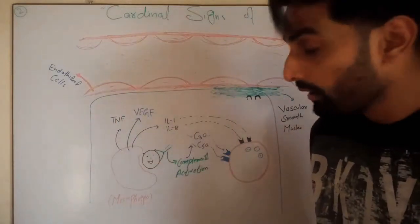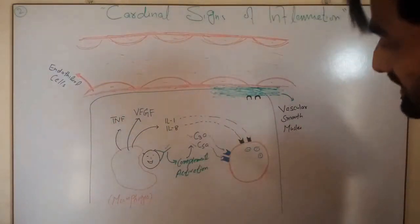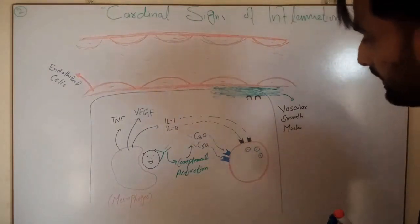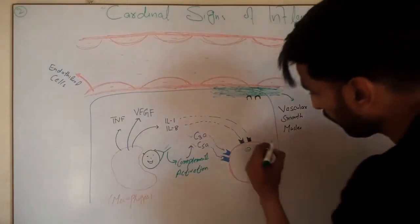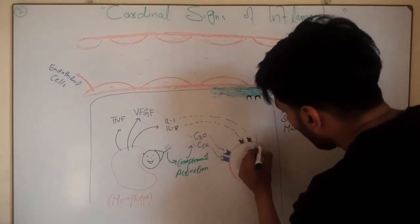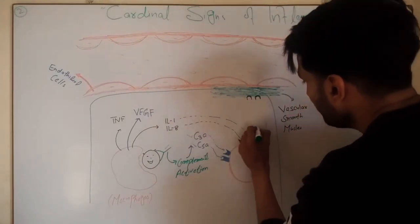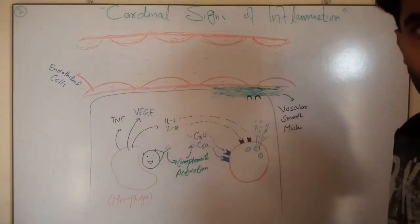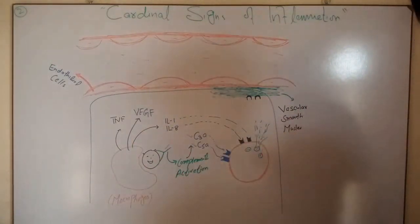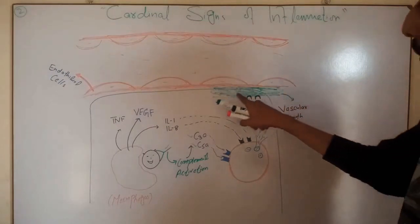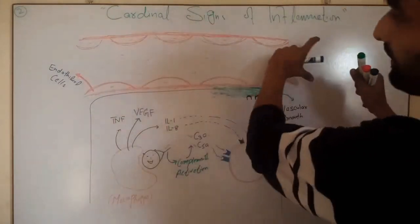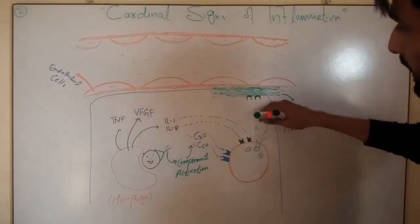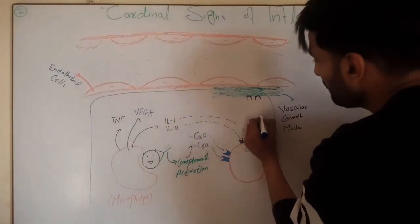Once these signals attach to the nearby mast cells — which are abundant in the tissue — the mast cell will release histamine stored inside its granules. There will be degranulation and histamine will be released outside the mast cell into the tissue. This histamine has receptors on the vascular smooth muscle of the nearby blood vessel.